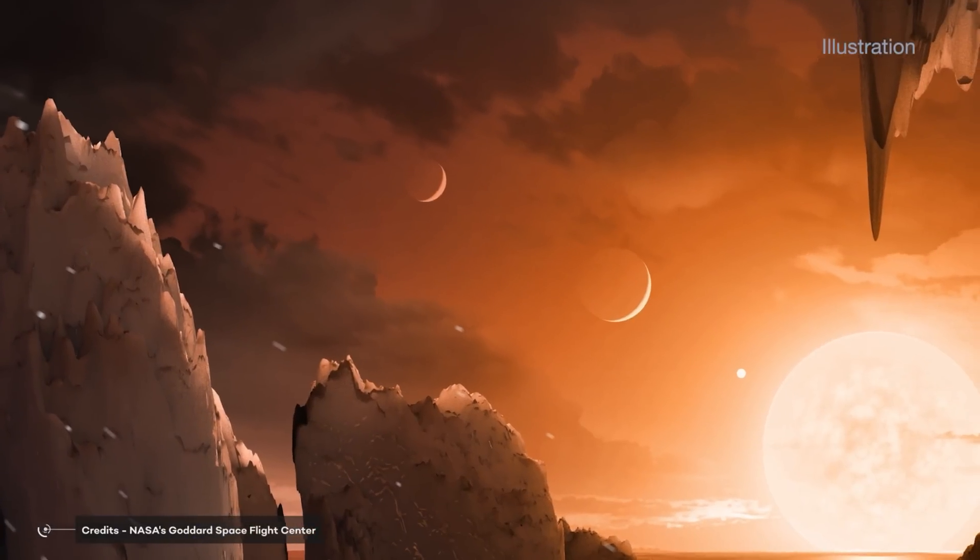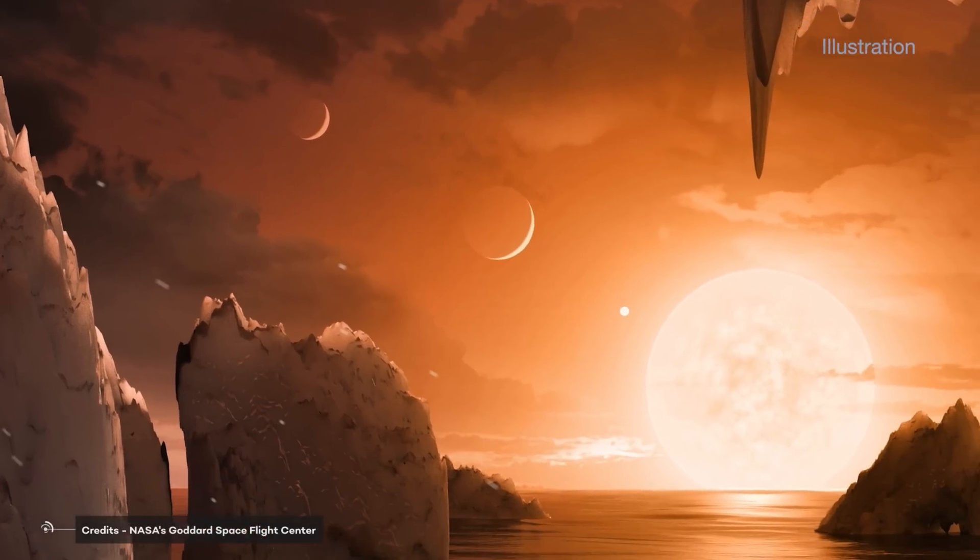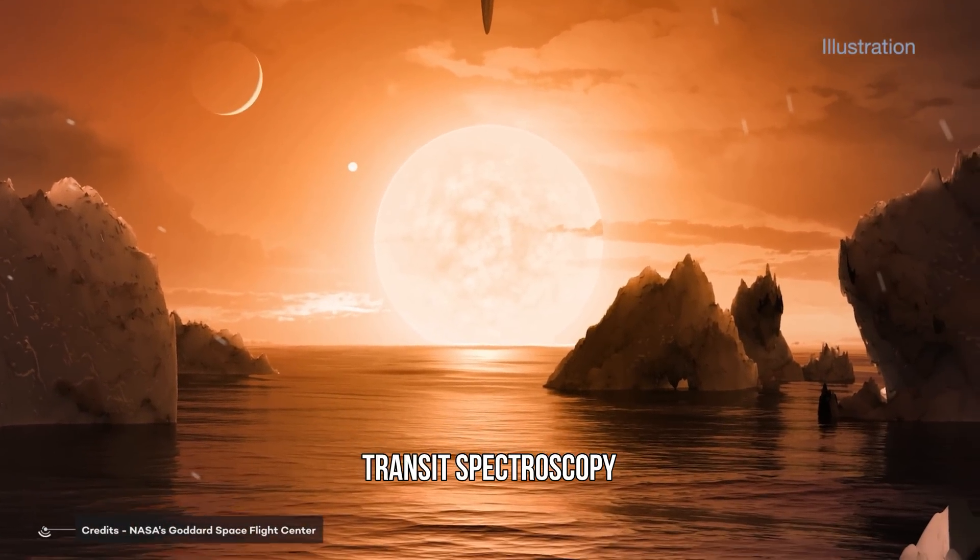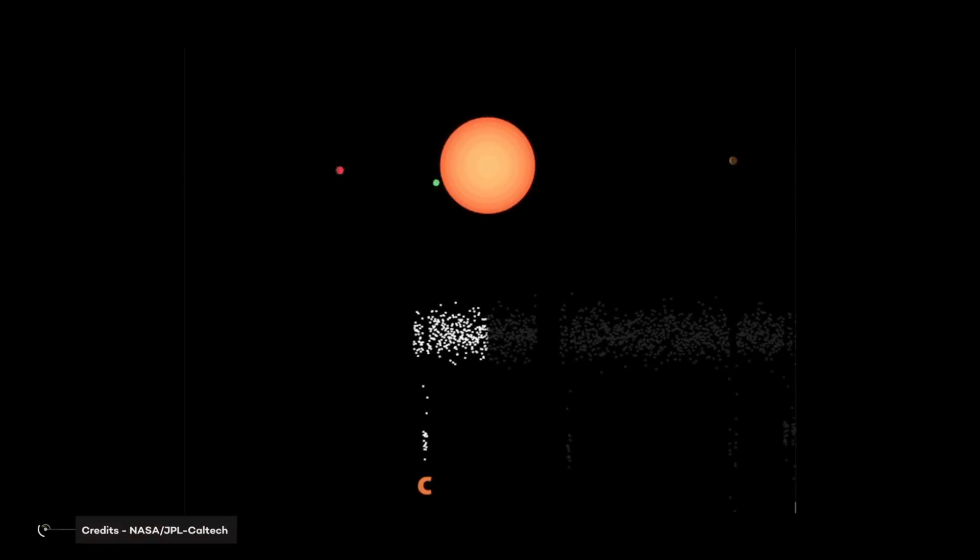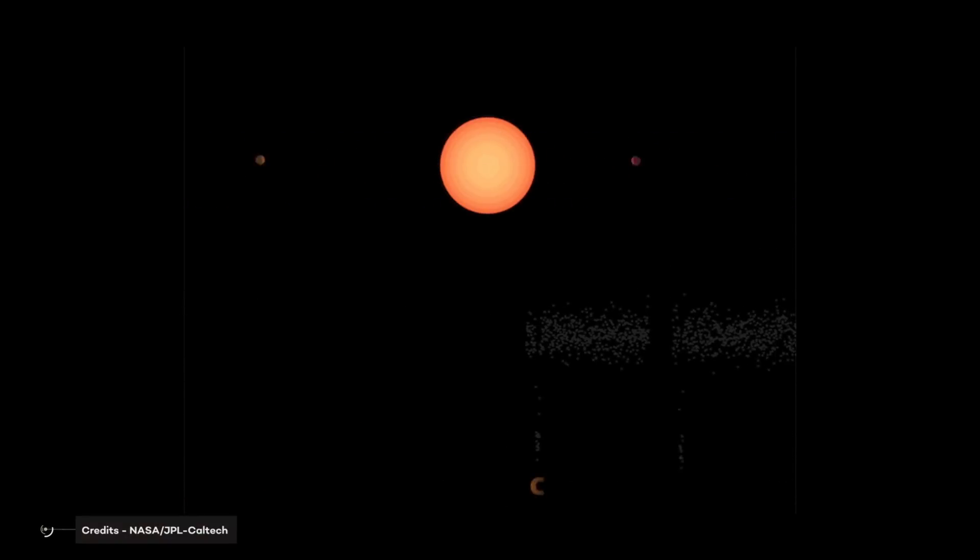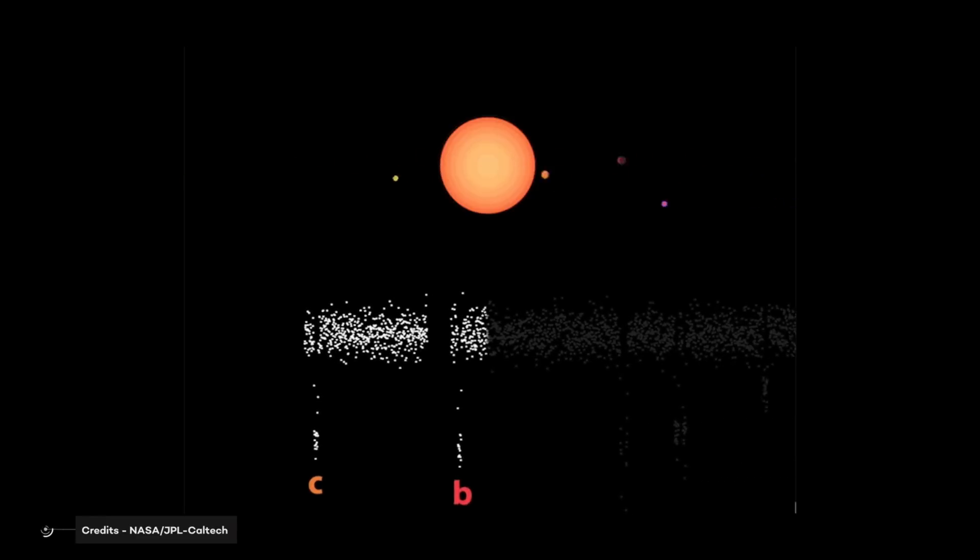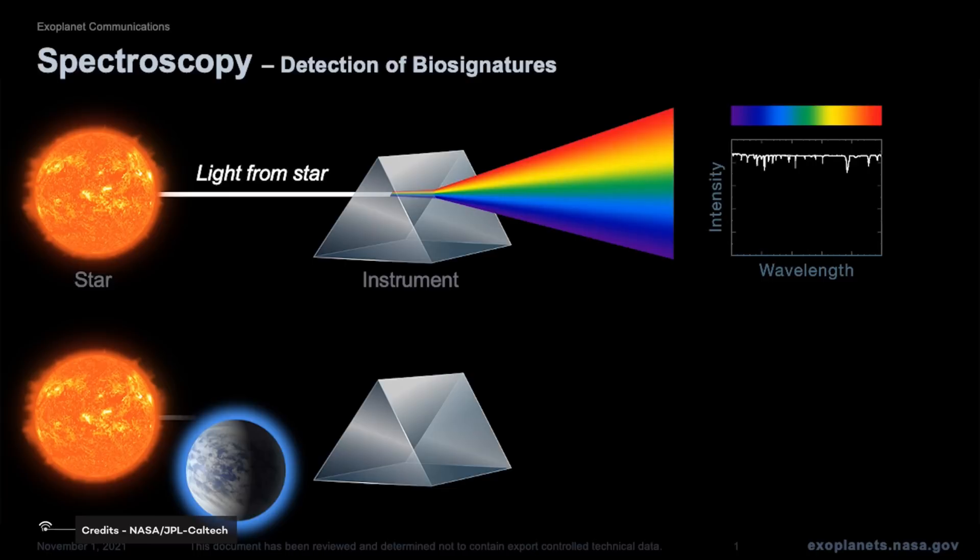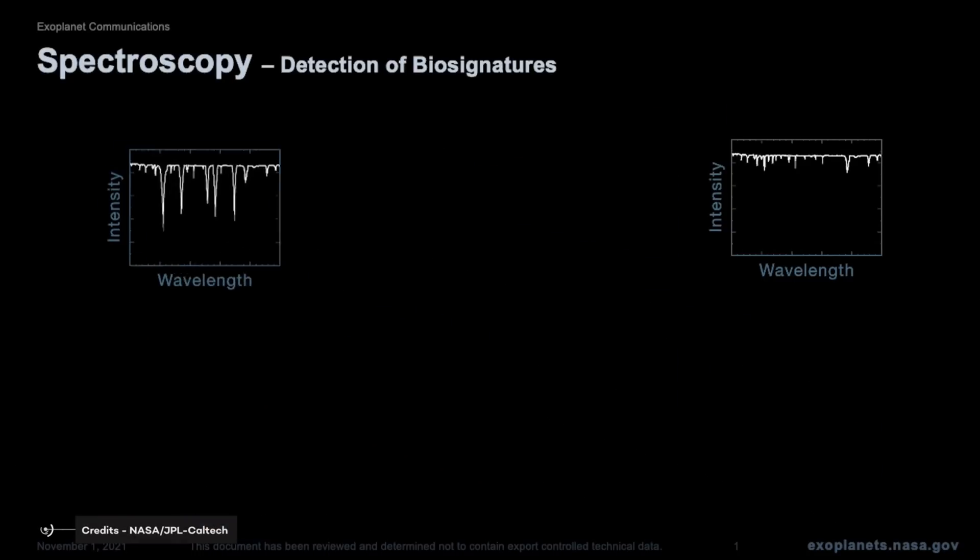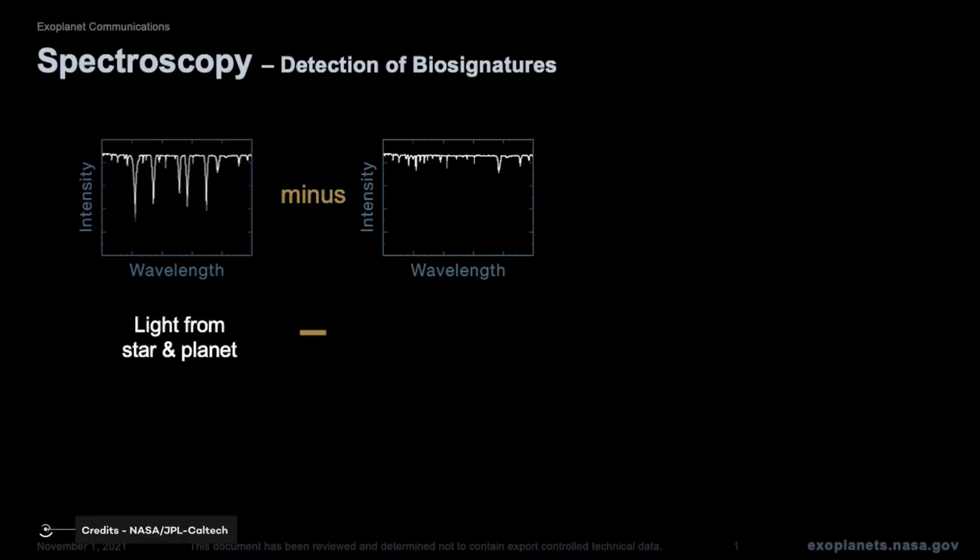The method scientists will use to work out whether or not the TRAPPIST-1 planets have atmospheres is called transit spectroscopy. Spectroscopy is the process of collecting light from an object and splitting it into its components by means of a disperser, thus giving the so-called spectrum. In the case of transit spectroscopy, it consists of taking a spectrum when the planet is transcending the star's disk.